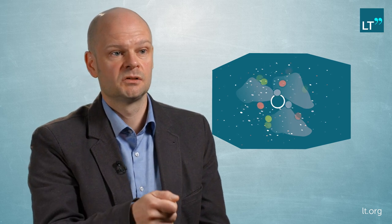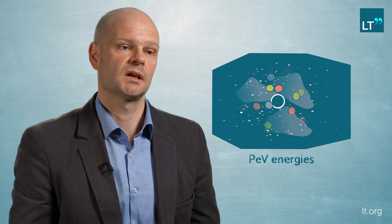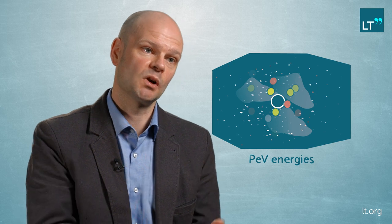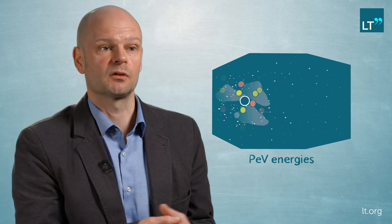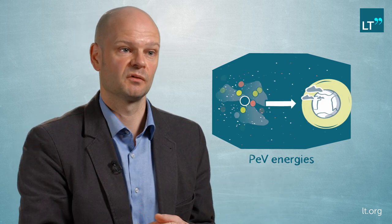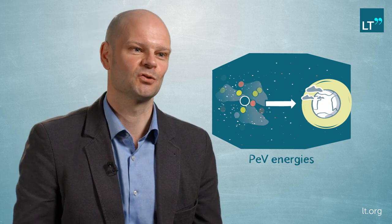Furthermore, the spectrum of the gamma rays indicates that particles are being accelerated close to the supermassive black hole to PeV energies—1,000 tera electron volts—and this was really unexpected. This is the only place in the galaxy where we see acceleration up to these energies. It could be that all of the PeV particles we see at the Earth are actually accelerated at the supermassive black hole, which is really against the conventional wisdom.